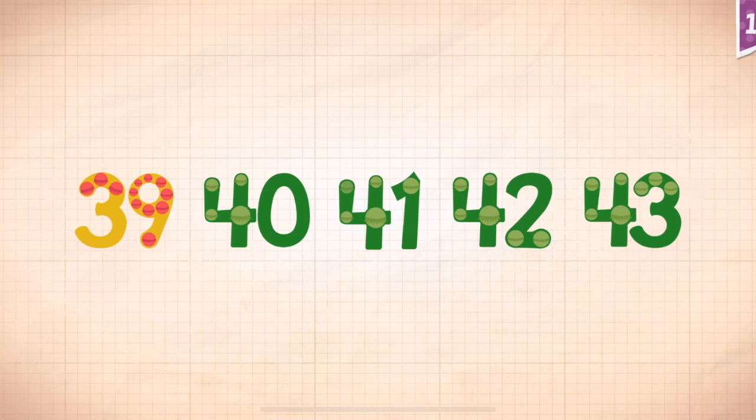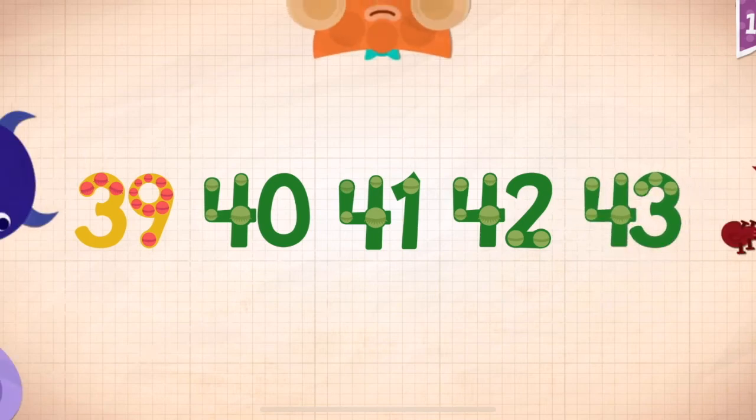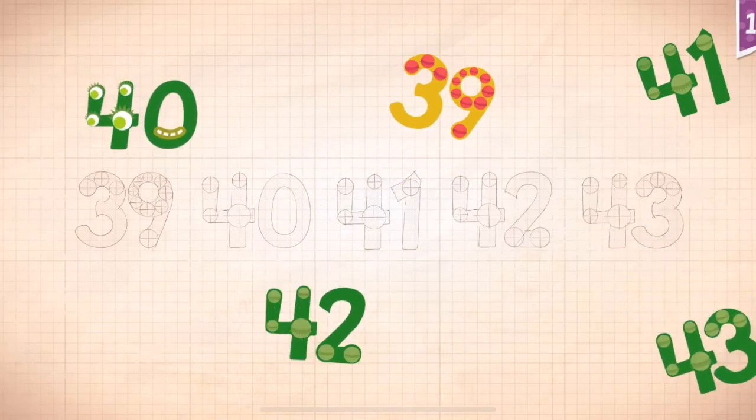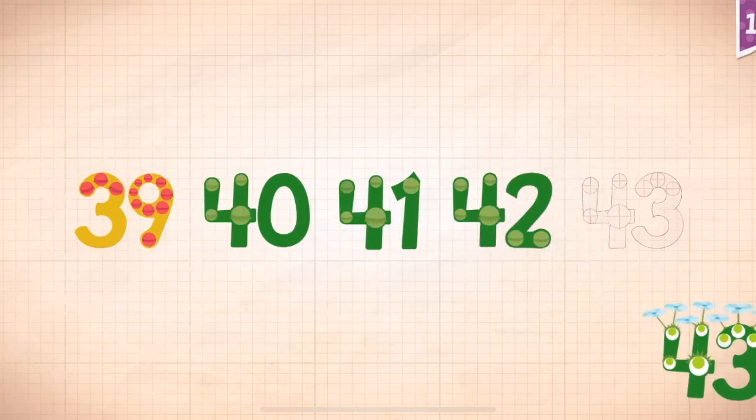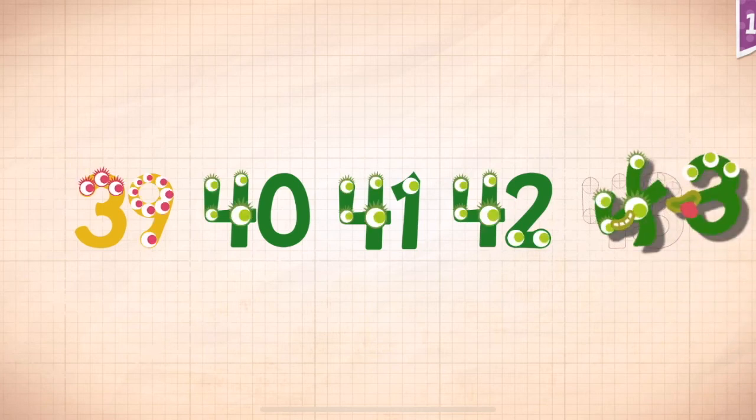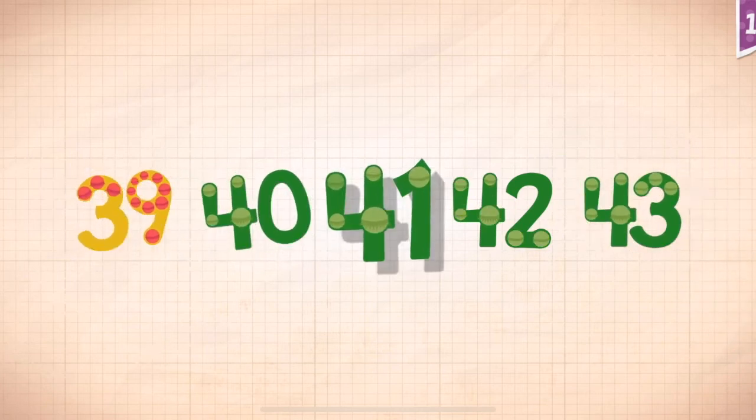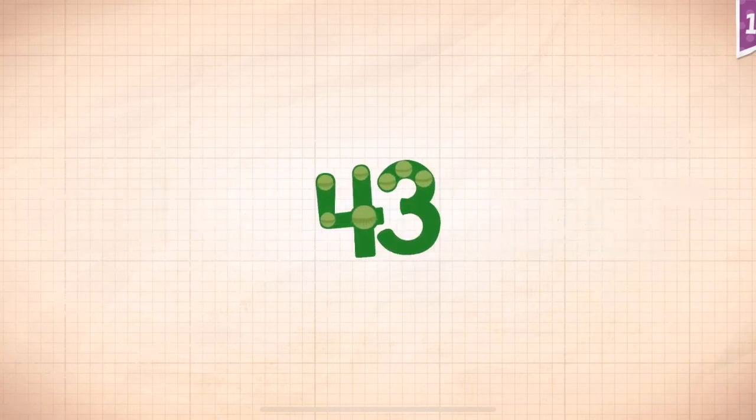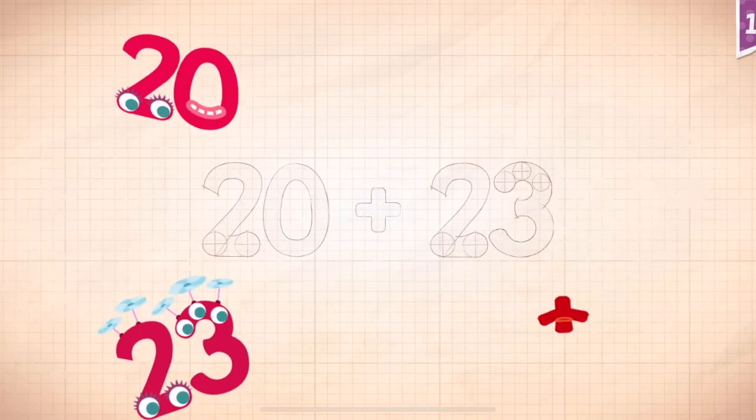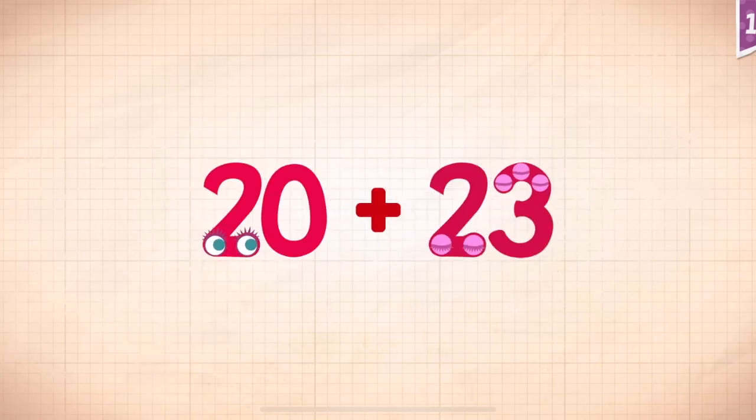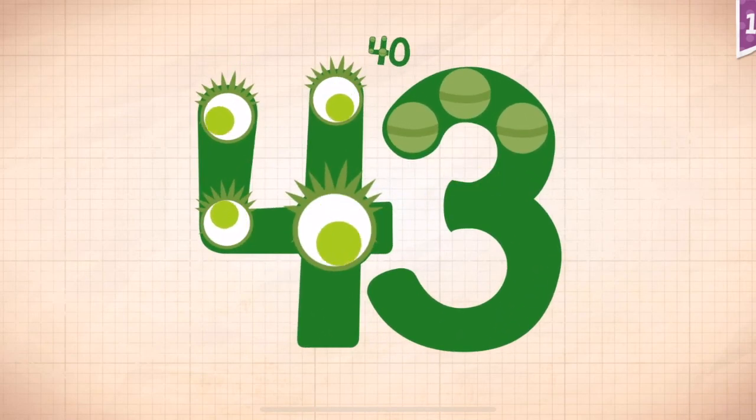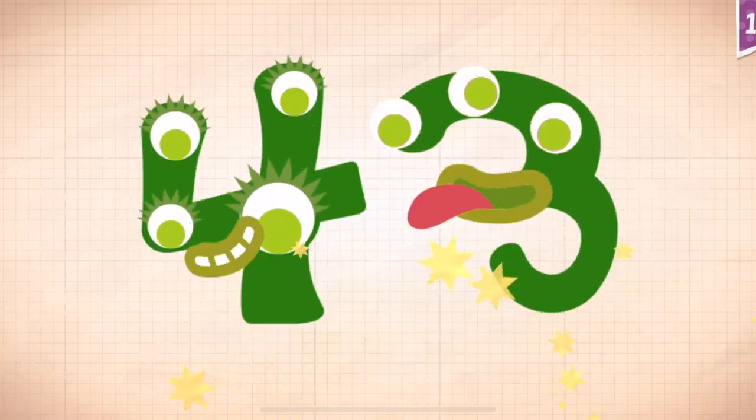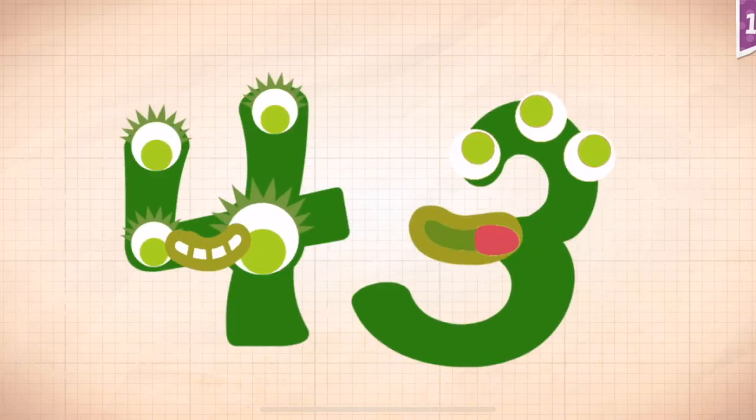Count by ones, starting at 39. 39, 40, 41, 42, 43. 20 plus 23 equals 43. 43.